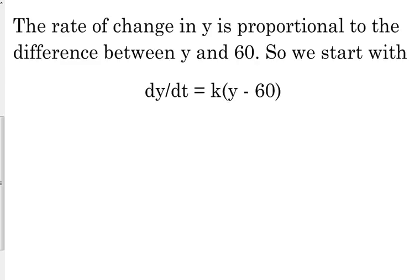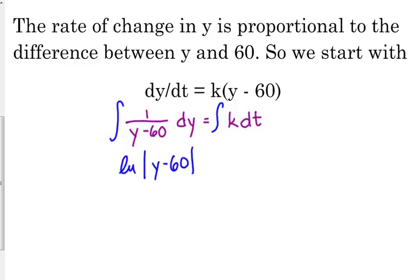This is where that big, long formula comes from. We need the Y on the left side, we need everything else on the other side, so that would be 1 over Y minus 60, DY, is equal to K DT. We're going to integrate. The integral is still the natural log, it's just the natural log of Y minus 60. The right side is still KT plus C.